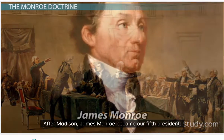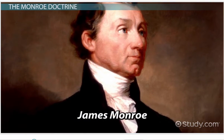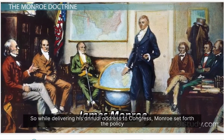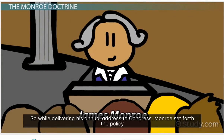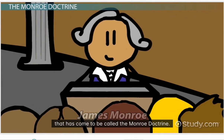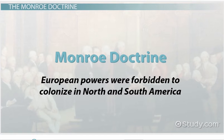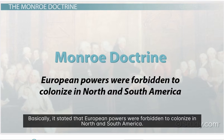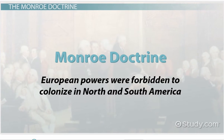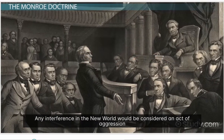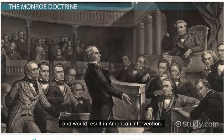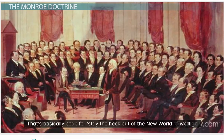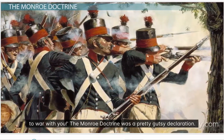After Madison, James Monroe became our fifth president. He decided it was time to put a stop to European intrusion in the Americas. So while delivering his annual address to Congress, Monroe set forth a policy that has come to be called the Monroe Doctrine. Basically, it stated that European powers were forbidden to colonize in North and South America. Any interference in the New World would be considered an act of aggression and would result in American intervention.